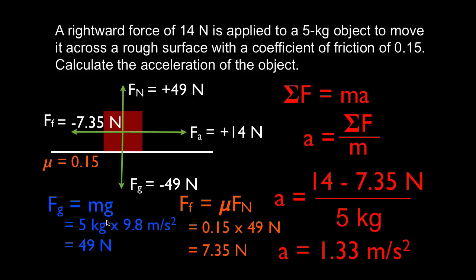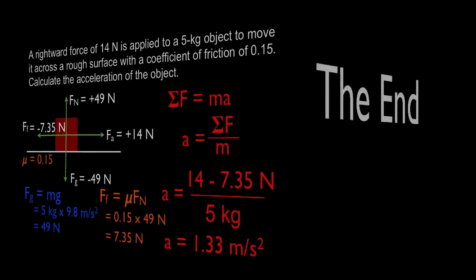In this case, we were given enough information to calculate the weight force and the force due to gravity, and then we had to use the coefficient of friction — the symbol mu — and the equation: force of friction equals mu times the normal force, to figure out and calculate the friction force, and then applied Newton's second law. I hope that was helpful. Thank you very much for watching. If you thought that was helpful, you could leave me a comment or a thumbs up, and we will see you next time.